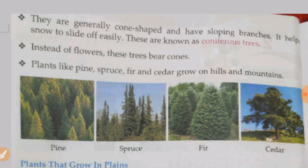Instead of flowers, these trees bear cones — small woody structures. In hills and mountains, flowers cannot grow because of the climate. Plants like pine, spruce, fir, and cedar grow on hills and mountains. These are examples of coniferous trees, and they are all cone-shaped.